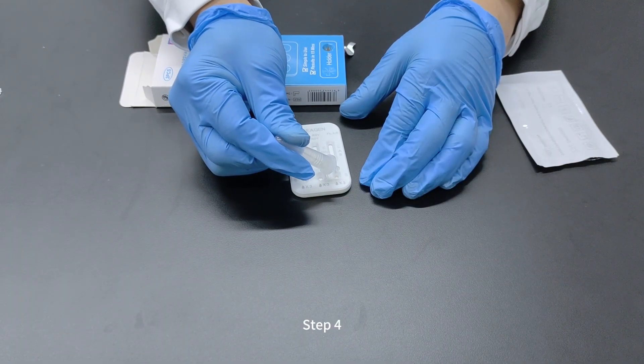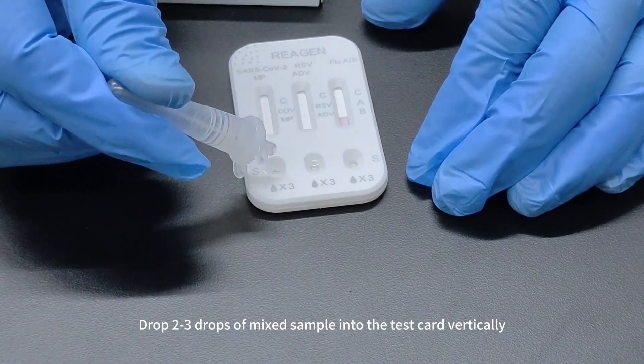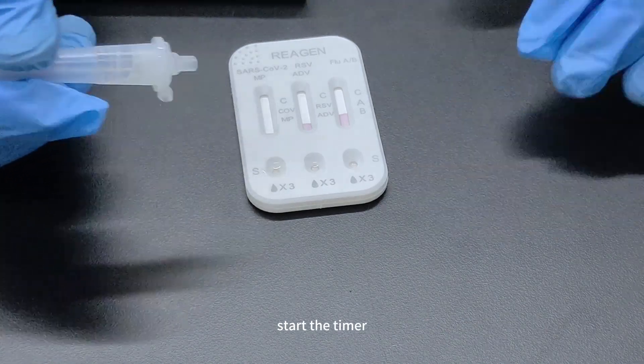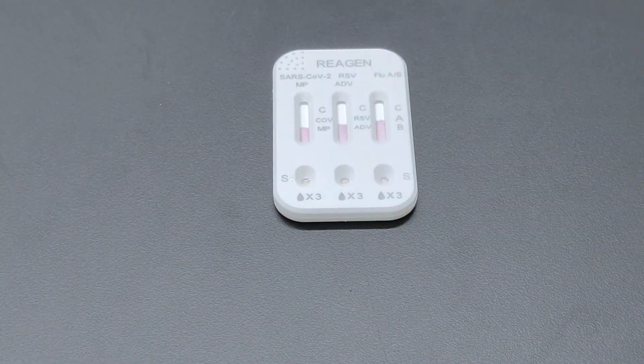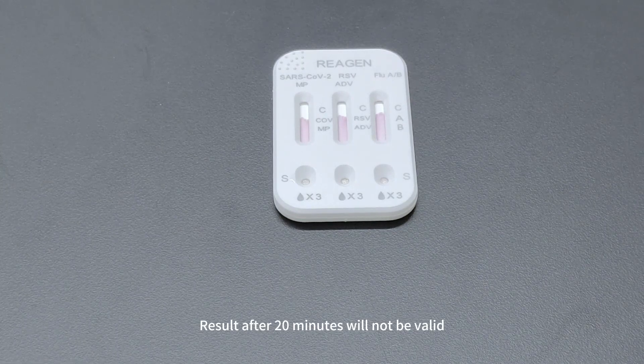Step 4: Drop two to three drops of mixed sample into the test card vertically. Start the timer. Read the result at 15 minutes. Result after 20 minutes will not be valid.